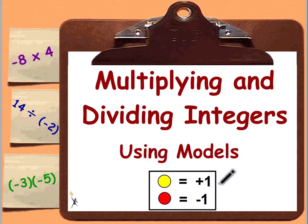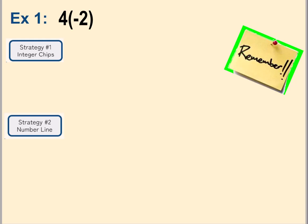Each chip represents one integer — yellow would be a positive, red would be a negative. There are also other models that use integer chips that aren't necessarily circular; they could be different shapes like triangular or square, and different colors. You're usually given a key that explains what would be a positive integer and what would be a negative integer.